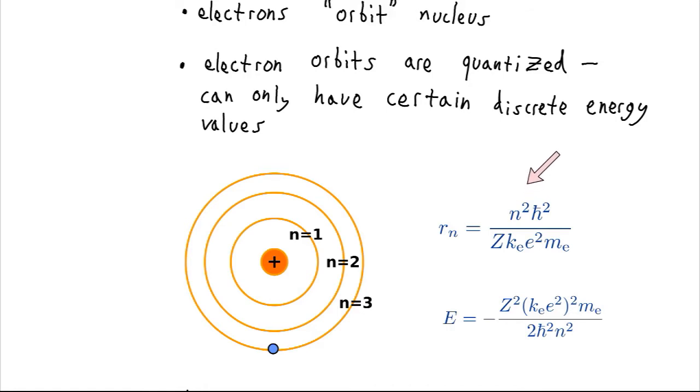It can be one, it can be two, it can be three, it can be four, etc. And so that will give us these different orbits and then each of those orbits has a specific energy associated with it.